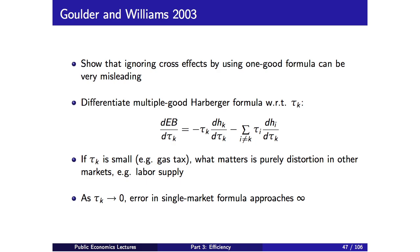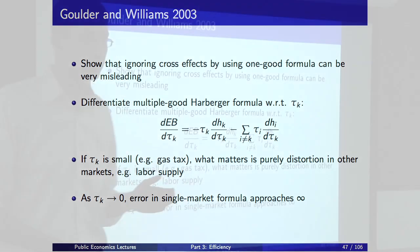What they show—which is just a derivative of the previous formula—is that dV/d-tau-k depends upon the own-price elasticity and cross-price elasticity terms. It follows immediately that if tau k is small—for instance, we're introducing a small gas tax—what matters to first order is purely the distortion in the other markets, such as labor supply. As tau k goes to zero, the error in the single-market formula approaches infinity. If I just applied the one-market formula and ignored the other terms, I would get the ratio of the two deadweight losses totally wrong.